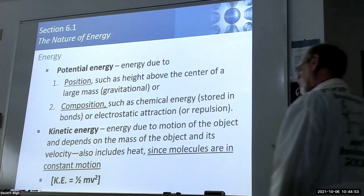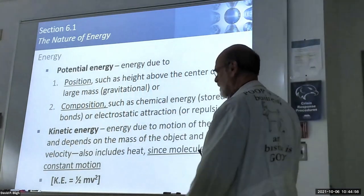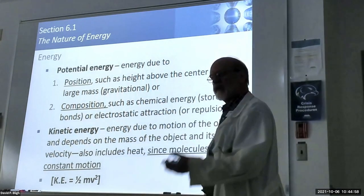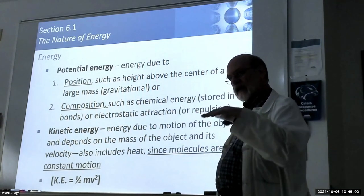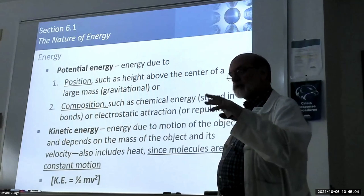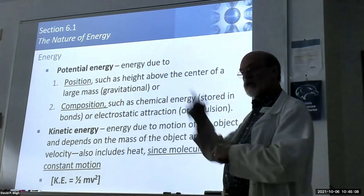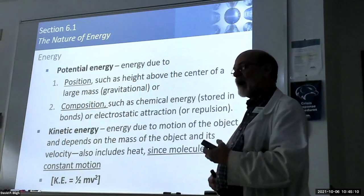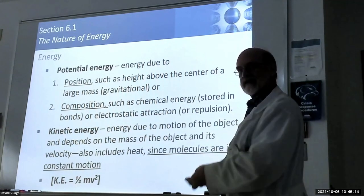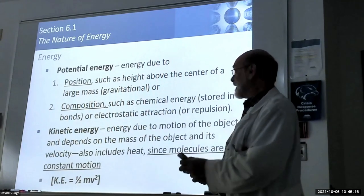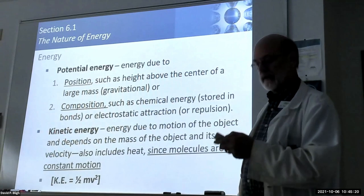When you think about heat on the molecular level, it's a form of kinetic energy, because molecules are moving. If you make them hotter, they move faster, so they're building up kinetic energy. So technically speaking, you've only got these two forms: potential and kinetic. That's it.